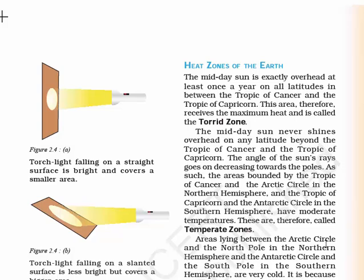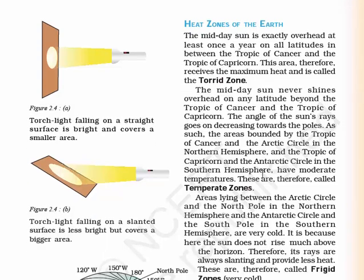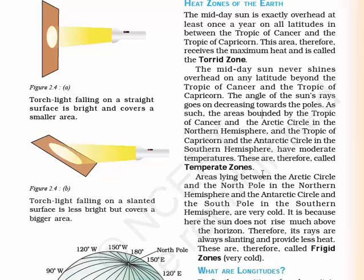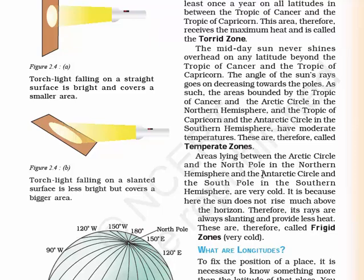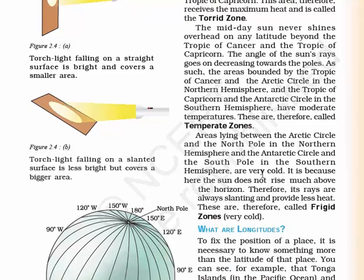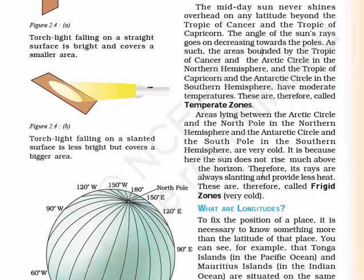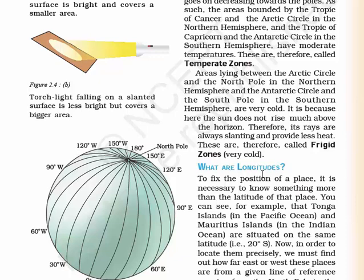In page three, we learn about the heat zones of Earth. They are broadly of three types: Torrid zone, Temperate zone, and Frigid zone. The Torrid zone is the region around the equator where sun rays hit the Earth directly. Due to Earth's shape, most of the heat is absorbed at the center, making it a torrid zone — this is why the sun is exactly overhead during afternoon. The areas bounded by the Tropic of Cancer and the Arctic Circle in the Northern Hemisphere, and the Tropic of Capricorn and the Antarctic Circle in the Southern Hemisphere, have moderate temperatures. The midday sun never shines overhead on any latitude beyond the Tropics of Cancer and Capricorn — these are called temperate zones. Areas above the Arctic Circle and below the Antarctic Circle are very cold. The sun does not rise much above the horizon and provides less heat; the angle of sun rays decreases towards the poles — hence this area is called the frigid zone.